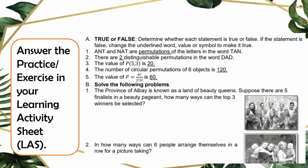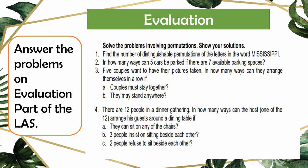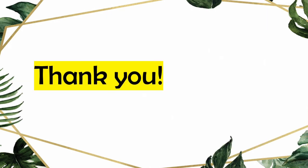That's it for solving problems involving permutations. For your activity, you have to answer a practice task found on your learning activity sheet. For Set A, it is a modified true-or-false activity — determine if each statement is true or false, and if false, change the underlined word, value, or symbol to make it true. For Set B, solve the following problems and identify the type of permutation. Finally, answer the evaluation part of your LAS with 4 problems, showing your solution and applying the correct formula. Thank you and happy learning!